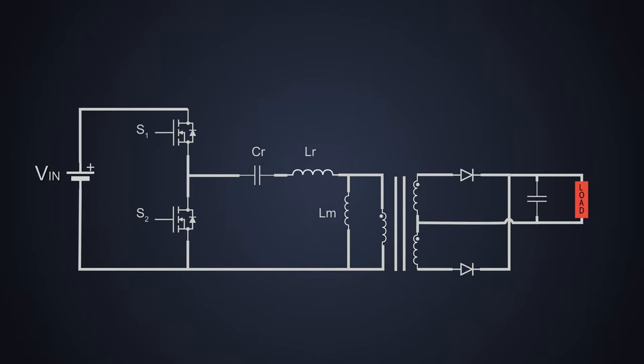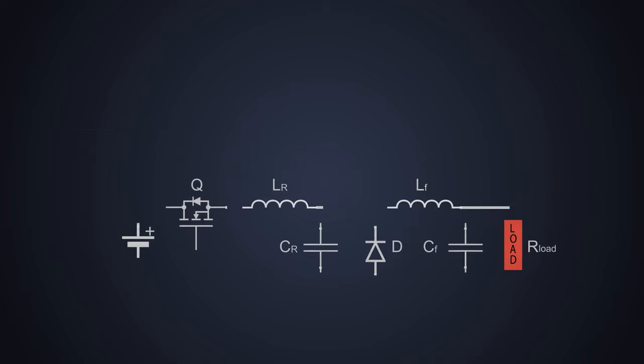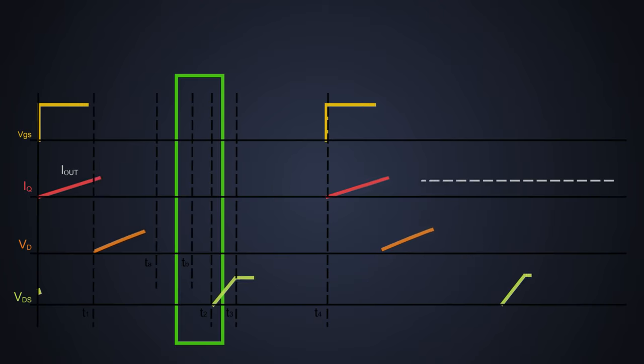Zero current switching is achieved by use of a resonant converter and special switching control. The switching of an active switch, say an N-channel MOSFET, is controlled in such a manner that while turning off, the current flowing to the MOSFET goes to zero.